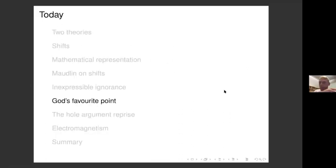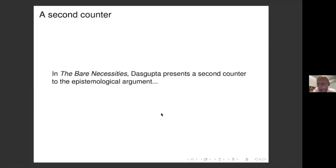In summary of this first section: the first two objections to Maudlin in Dasgupta's earlier papers simply beg the question against him. The mature inexpressible ignorance argument rests on certain philosophy of language assumptions — a neo-Russellian conception of reference — which Maudlin can be read as rejecting. There are positions in the philosophy of language which, if endorsed, seem to make Maudlin's argument work. Whether you think it succeeds therefore depends on your commitments in philosophy of language.